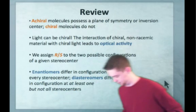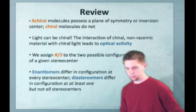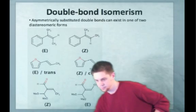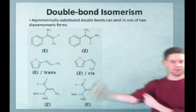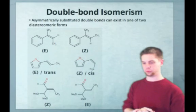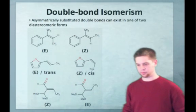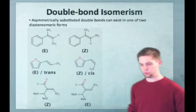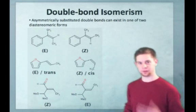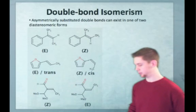Today we'll be looking at double bond isomerism. First, we'll take a look at the EZ system used for double bond nomenclature. Double bonds can exist in one of two isomeric forms, and remember, these are diastereomers because we actually observe different distances between groups in the molecules.